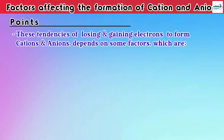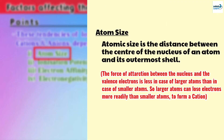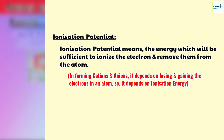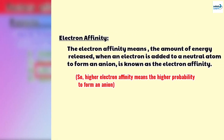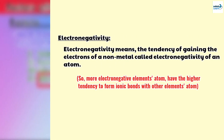This tendency of losing electrons to form cations or gaining electrons to form anions depends on some factors, which are atomic size, ionization potential, electron affinity, and electronegativity. Atomic size is simply the normal atom size. Ionization potential is the energy required to remove an electron from the atom. Electron affinity is the amount of energy released when an electron is added to a neutral atom to form an anion. Electronegativity is the tendency of a non-metal atom to gain electrons.